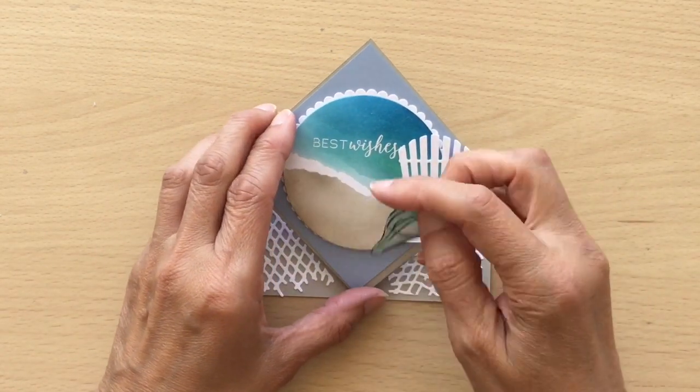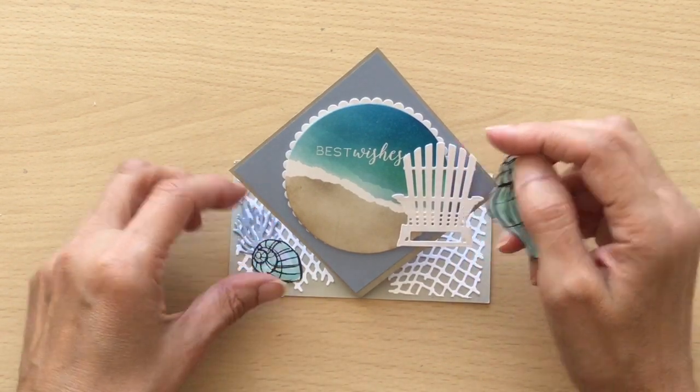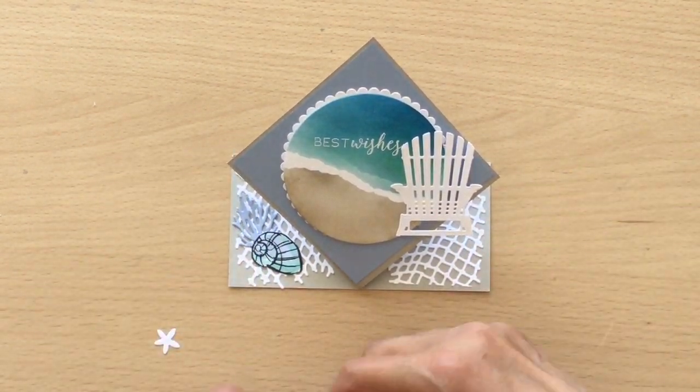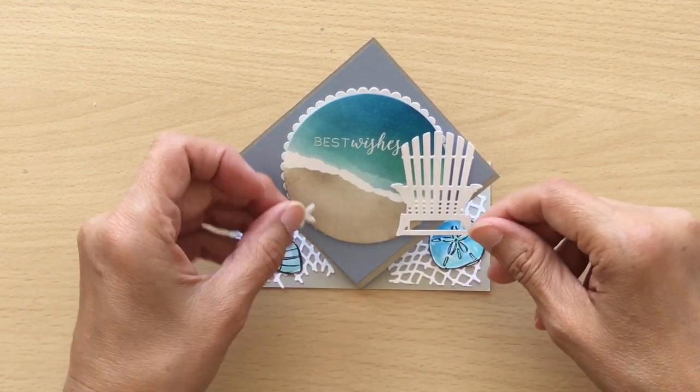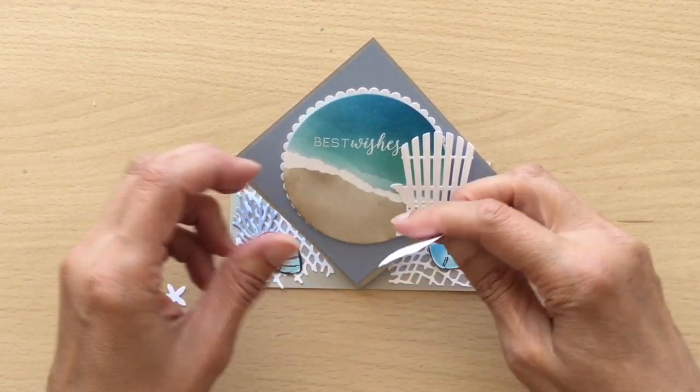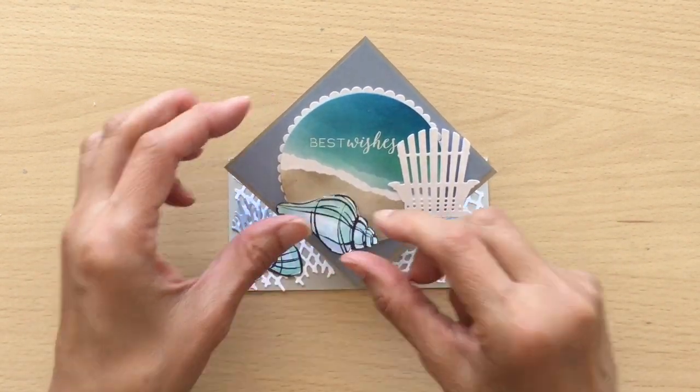Now I'm just going to decide where I want my shells to go. So I'm going to have some down here on the bottom. I've got a little sea urchin as well and a little starfish and I'm going to have some up the top here. So I'm going to put those on and then I'll show you when I finished.